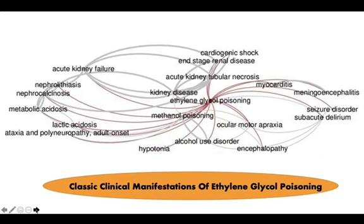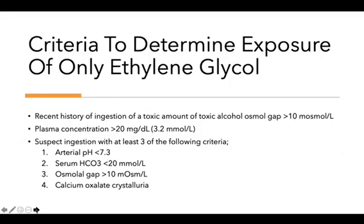Here are detailed clinical manifestations of ethylene glycol poisoning — feel free to pause the video to review those. To confirm that the causative agent is ethylene glycol, we check four criteria: arterial pH less than 7.3, serum bicarbonate less than 20 mmol/L, osmolal gap greater than 10 mOsm/L, and calcium oxalate crystalluria. If the patient presents with at least three of these four criteria, we can safely confirm ethylene glycol poisoning.